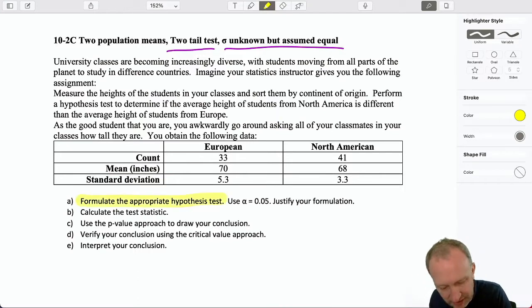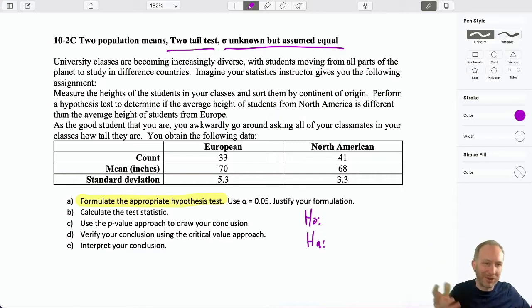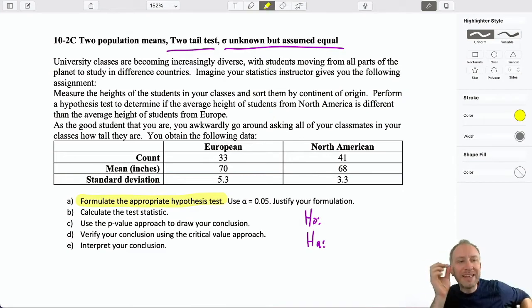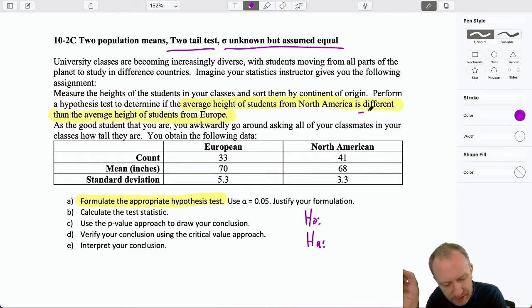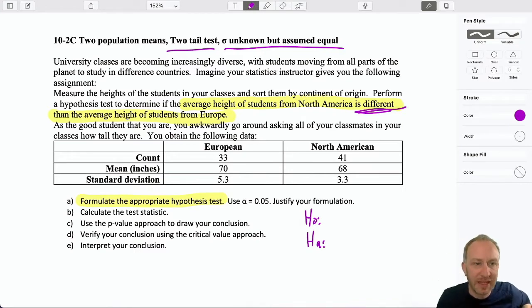So how do we know what kind of a test we're going to be doing? Our first step of course is to formulate the hypothesis. So I put together my null and alternative and I'm thinking is this lower tail, upper tail, or two tail test? We need to go back to really the wording of the problem, the wording of the assignment. I'm performing a test to determine if the average height of students is different than the average height of students from Europe. There's that keyword that's telling me what kind of test I'm doing. I'm only testing to see are they different or not.